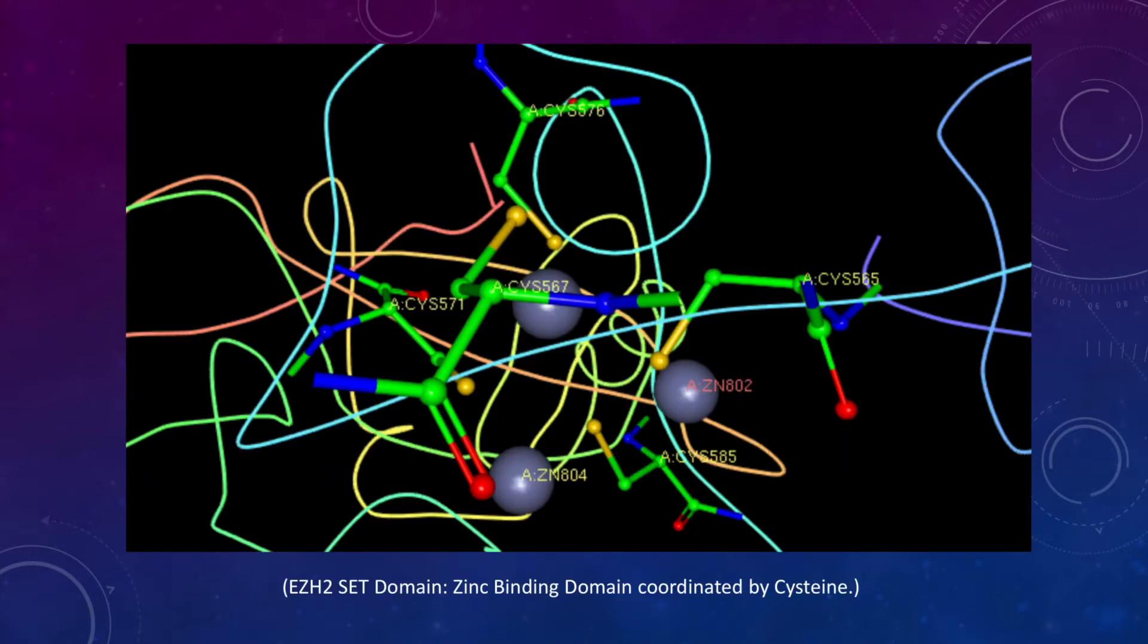Within the SET domain, three zinc binding domains help create a cofactor binding pocket and a portion of the substrate binding groove. The zinc atoms are also responsible for stabilizing the protein.